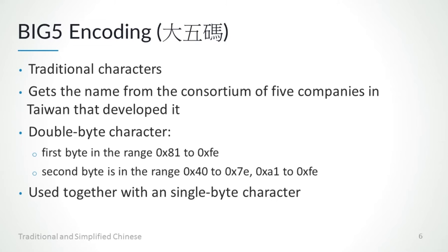The single byte characters will take up the range from hexadecimal value 00 to 7F. You will find a mix of double byte characters and single byte characters in a Big5 encoded text document.